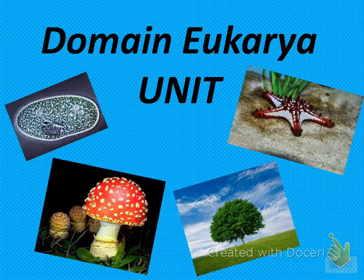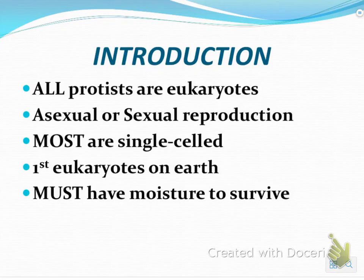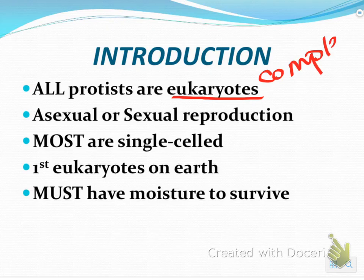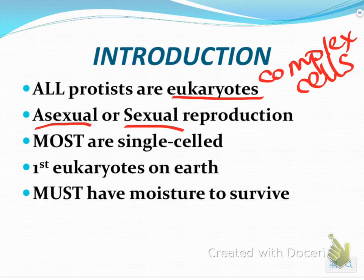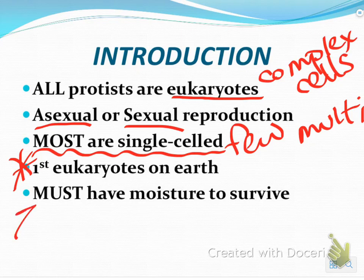This will be the first set of four video notes for the Domain Eukarya unit. These notes will be about Kingdom Protista, or your protists. All protists are eukaryotes, which means they have complex cells. They can do asexual or sexual reproduction, and most are single-celled, with a few multicellular. The theory is they were the first eukaryotes on Earth, and they must have moisture to survive — they cannot live in dry environments.